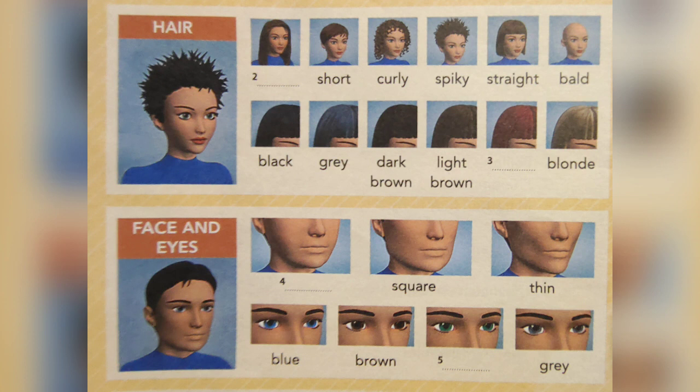Long. Short. Curly. Spiky. Straight. Bald. Black. Gray. Dark brown. Light brown. Red. Blonde.